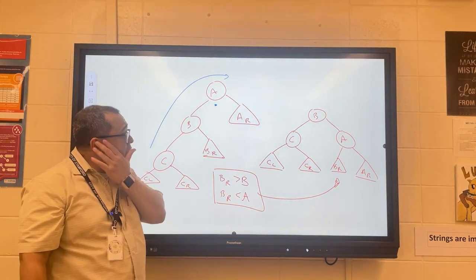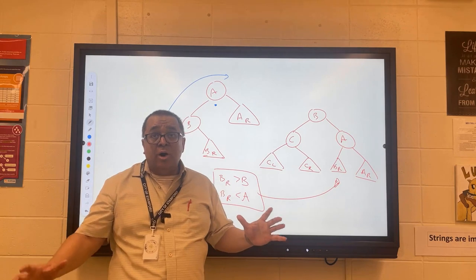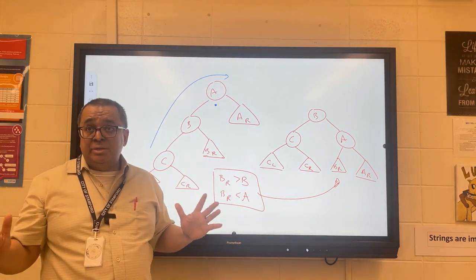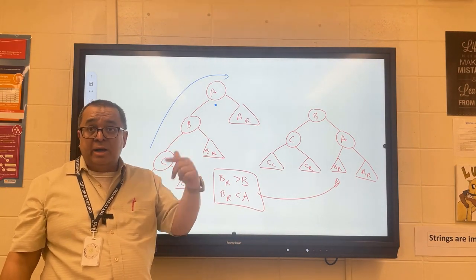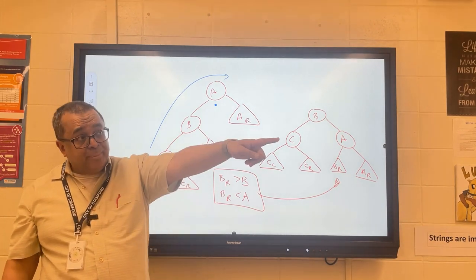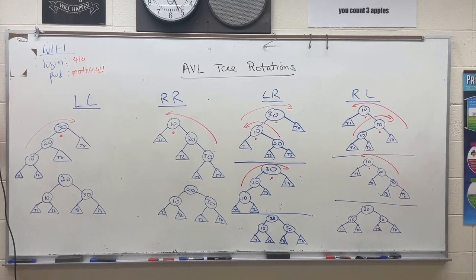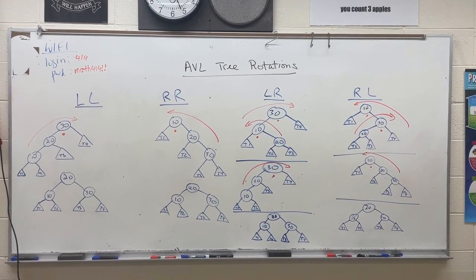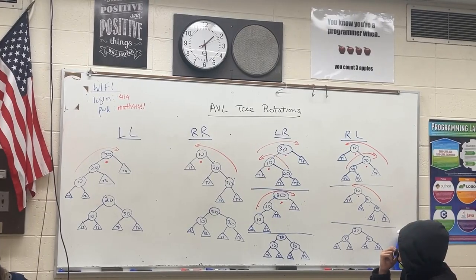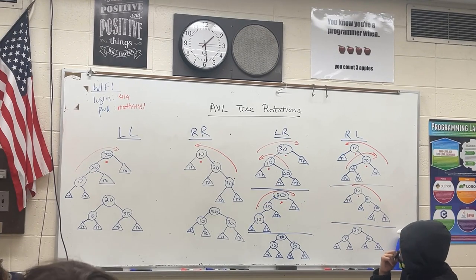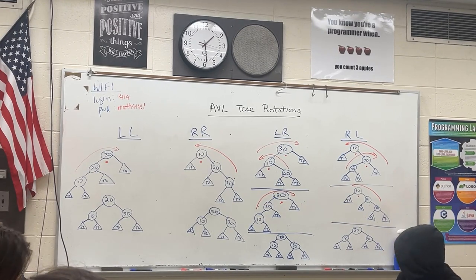Now it turns out that there are four rotations we need to consider: LL, RR, LR, and RL. What I've done on that board right there is I've shown you what happens when they all are fully populated with subtrees. You can see in the first case, if I have an LL imbalance...